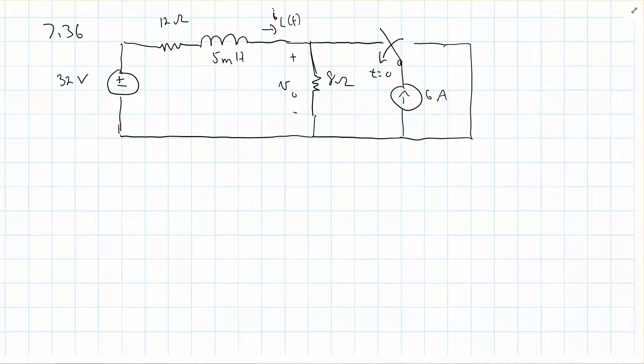I'm not going to do the whole problem, but we have this switch here. Basically, you can look at it as connecting up a 6 amp power supply at t equals 0, and before 0, that 6 amp power supply is not connected to the circuit.